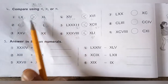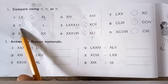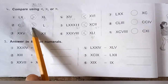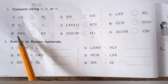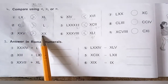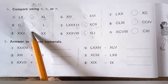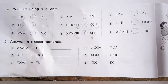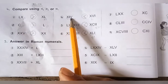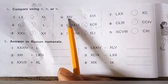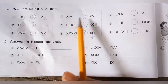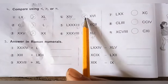So LX represents 60, which is greater than XL representing 40. Next, C represents 100, which is greater than L representing 50. XXV represents 25, which is greater than XX representing 20. Next, XIV means 10 plus 4 equals 14, and XVI means 10 plus 6 equals 16, so 14 is less than 16.